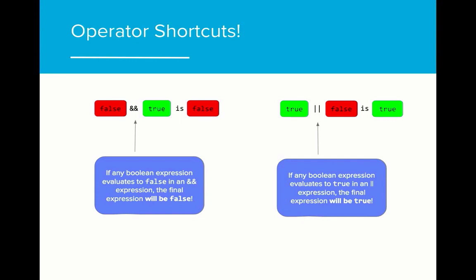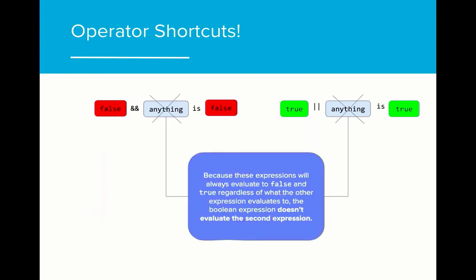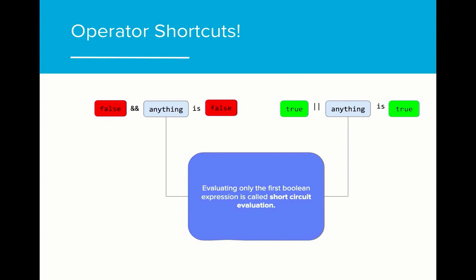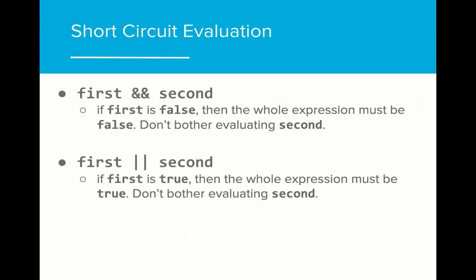Because AND expressions evaluate to false if any condition is false, and OR will evaluate to true if any condition is true, there is a shortcut we can utilize to make our programs run more efficiently. If the first value of a Boolean expression is false in an AND operation, or the first value is true in an OR operation, the remaining conditions are irrelevant. Because these expressions will always evaluate to false and true respectively, regardless of what the other expression evaluates to, Java will not evaluate the second expression. This process of skipping the second condition in a Boolean expression is called short circuit evaluation. For AND expressions, if the first condition is false, we don't bother evaluating the second condition because we know the expression will evaluate to false. For OR, if the first expression is true, we don't evaluate the second because we know the expression will evaluate to true.